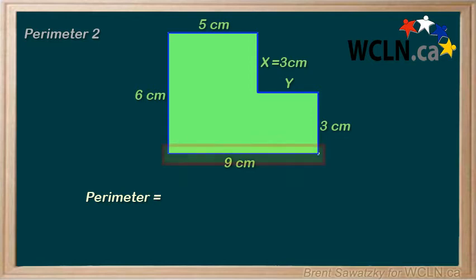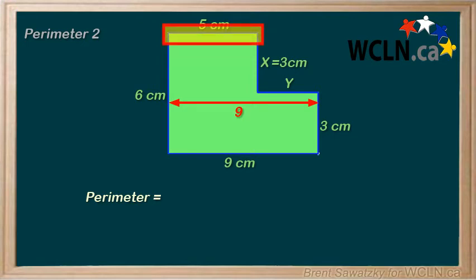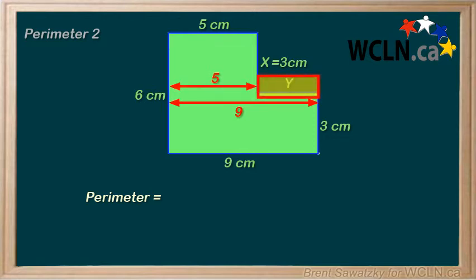Well, we know that this side on the bottom is 9 centimeters, and that's the same here, or here. And we know that this side on the top is 5 centimeters, and that's the same here, or here. So we can see that our side Y is really just 9 centimeters minus 5 centimeters, or 4 centimeters.